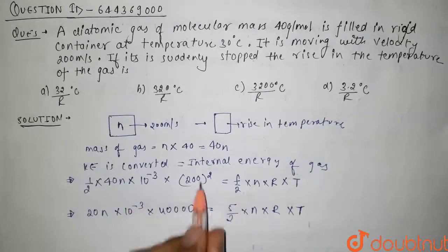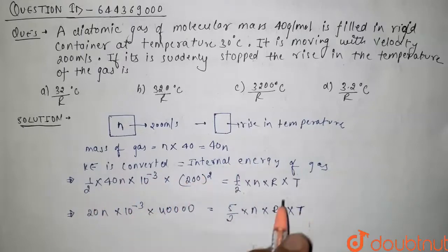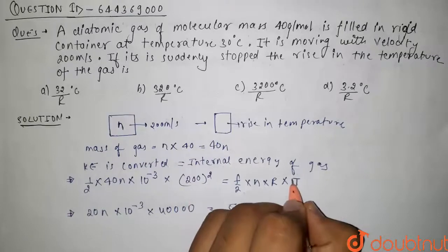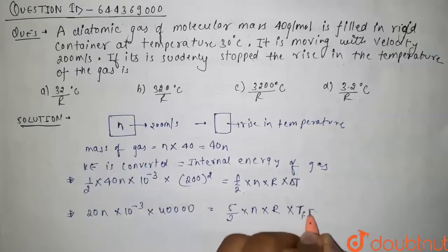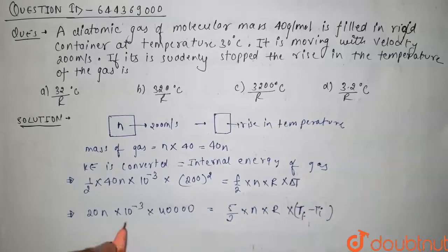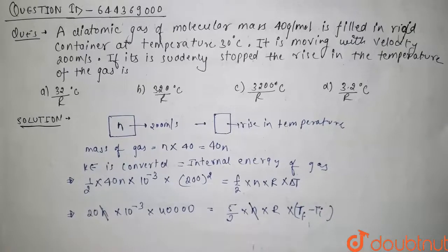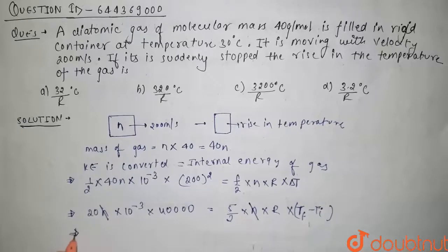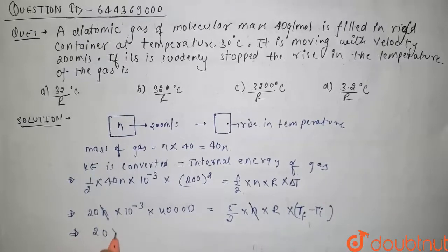Since this kinetic energy will be converted into internal energy, it will be delta T here. So it will be T final minus T initial. From here, n and n will cancel, so it comes out to be 20 times 10 to the power minus 3 times 40000 equals 5 by 2 times R times delta T.